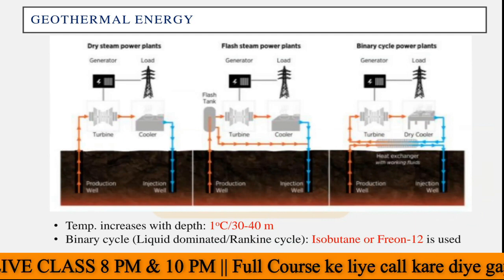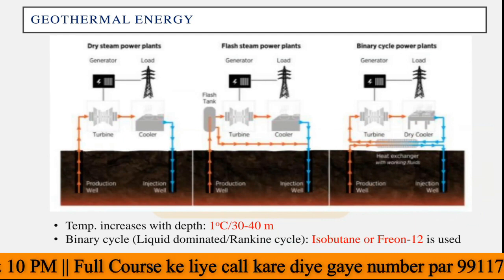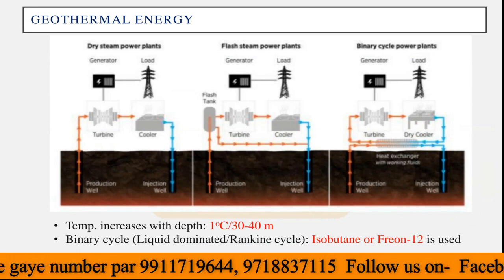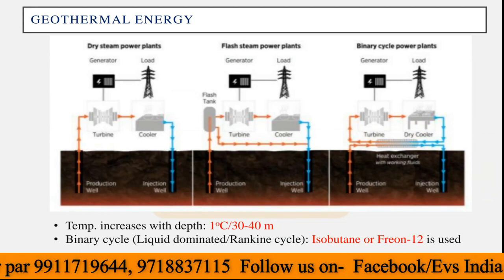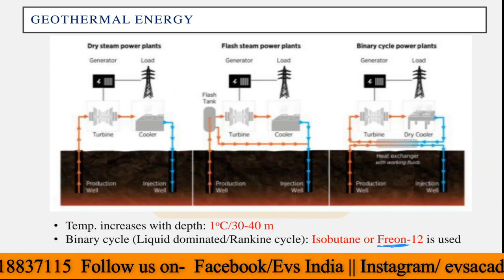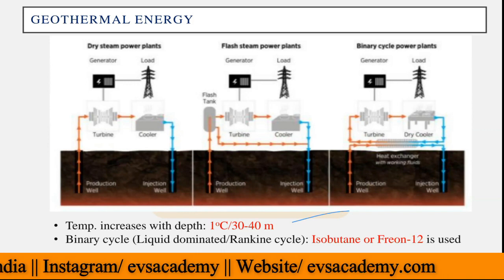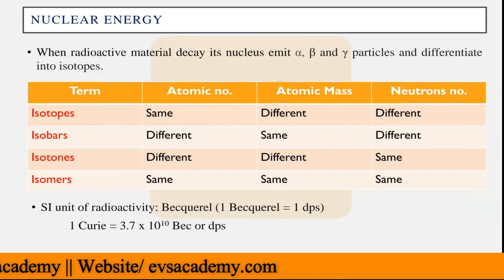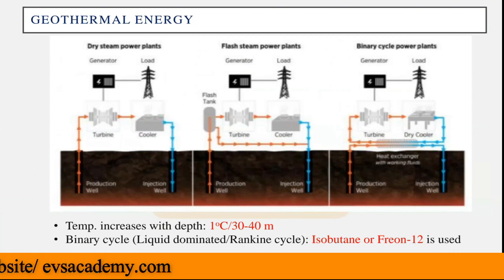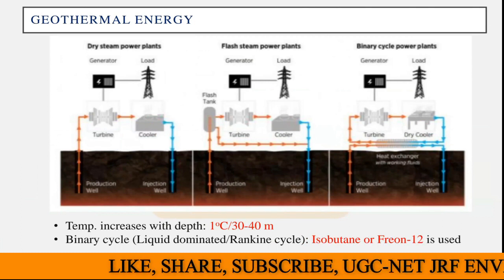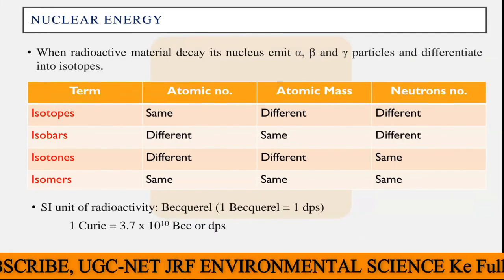Whenever they ask you a question like what liquid is used in the Rankine cycle of geothermal energy production, the options will include both Furon and Freon. Carefully select Freon — it is not Furon. The efficiency formula is also the same here: 1 minus T-cold divided by T-hot, to calculate the efficiency of the geothermal energy power plant.